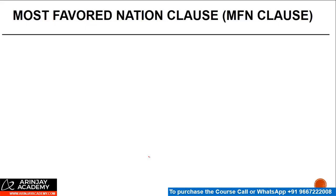Most favored nation clause. Now what happens is that there are two countries, let's say X and Y. The way these treaties are structured are a lot more dependent on the relationships which one country has with the other and respect for international laws, rather than going strictly by the law or what is there in some other treaty.